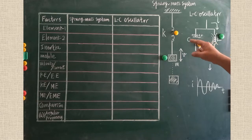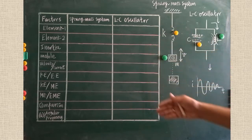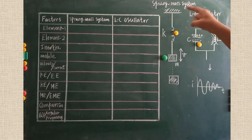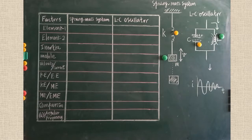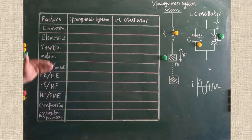Now we are going to compare the spring-mass system and LC oscillator system. In the spring-mass system, mechanical oscillations are set up. In the LC oscillator, electromagnetic oscillations are set up. We have to compare mechanical and electromagnetic oscillations — several factors can be compared. Our ultimate aim is to get the value of omega in the LC oscillator by comparing with the spring-mass system.